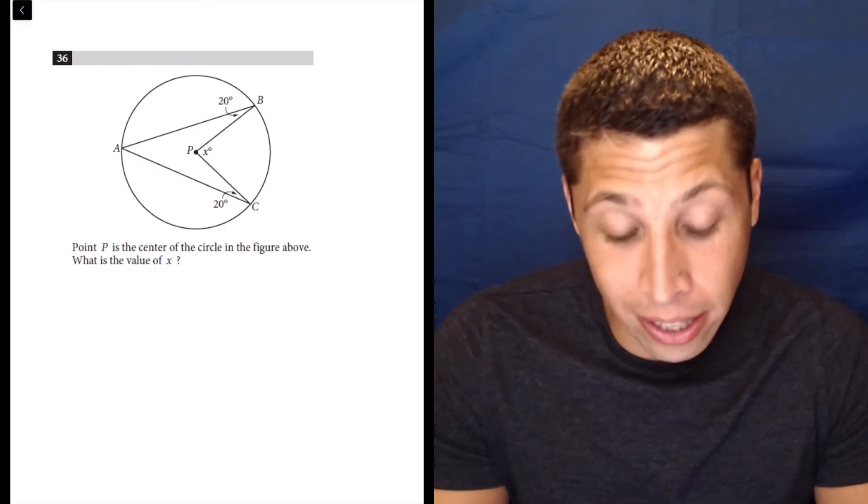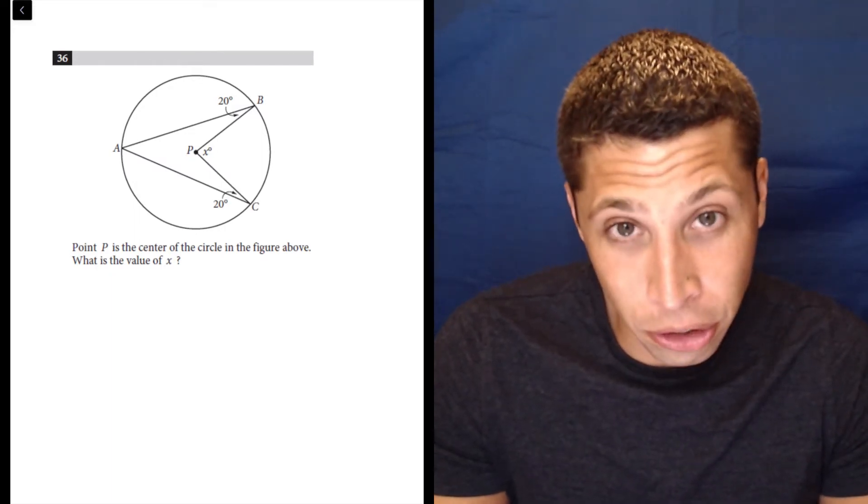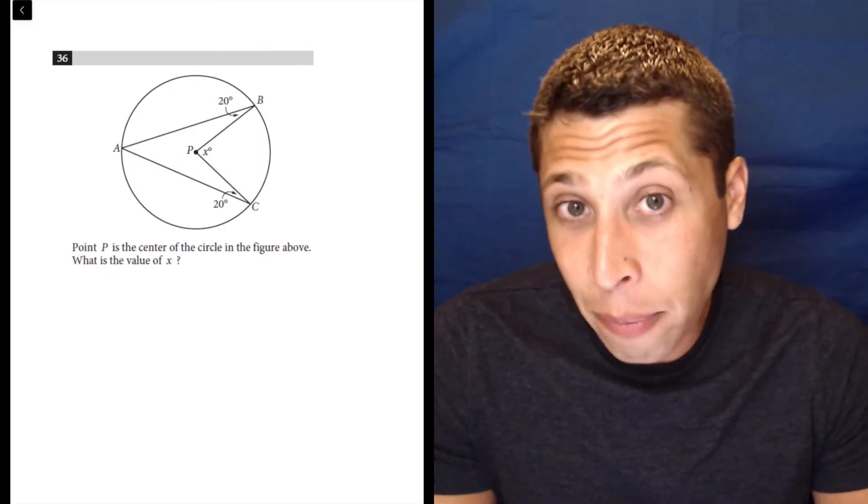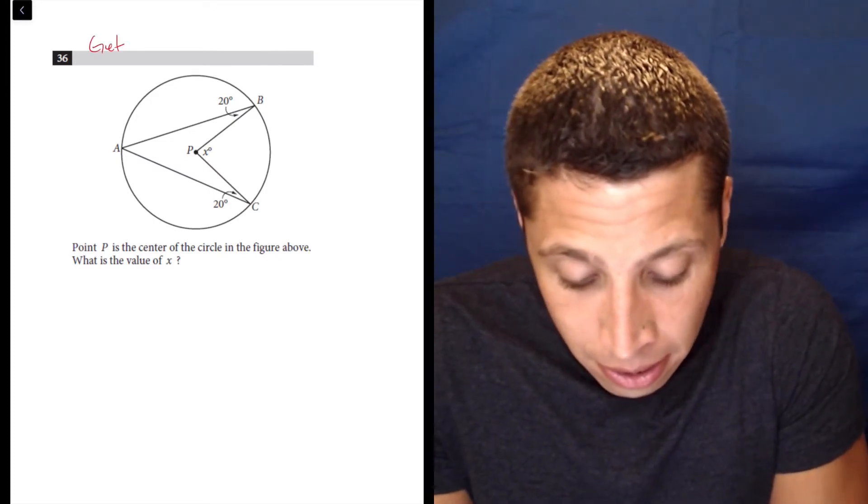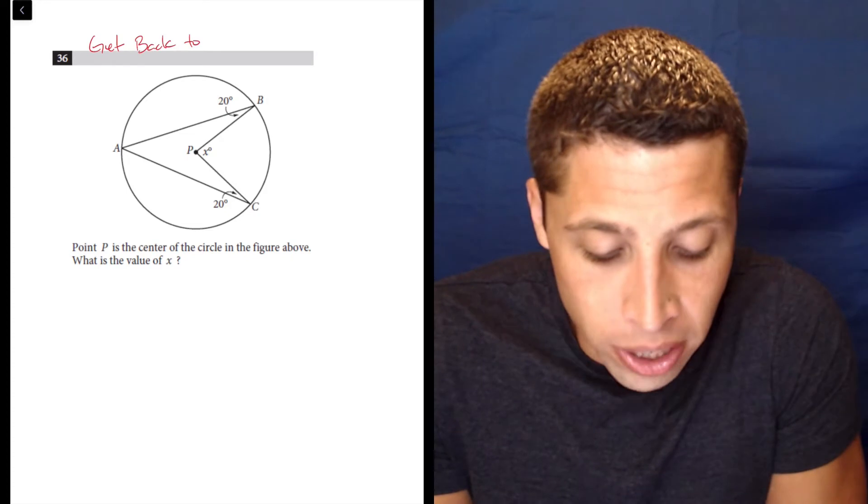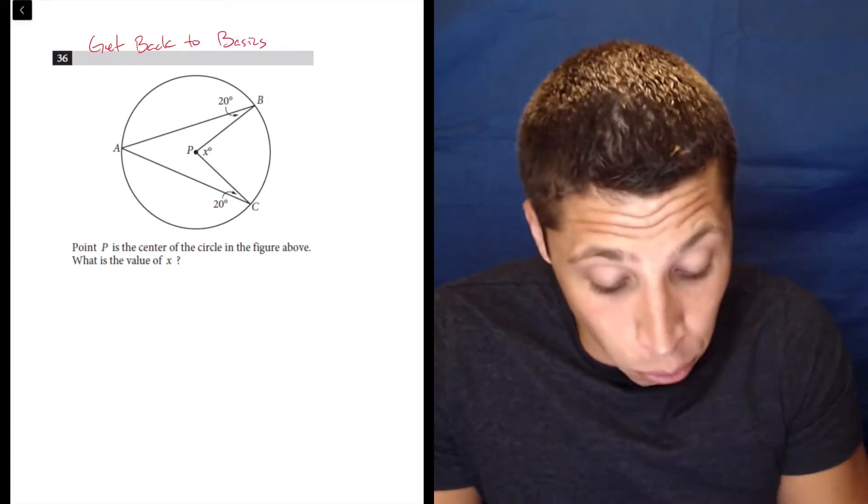And we have a weird one, right? We can tell we got a circle, but then we also got this weird shape in the middle. Now any time we have weird shapes, our goal should be to get back to basics because we understand geometry when it's in its basic form, right?